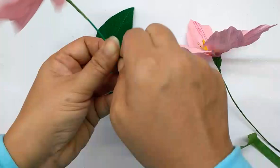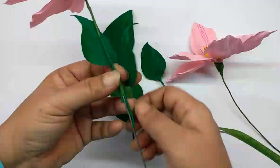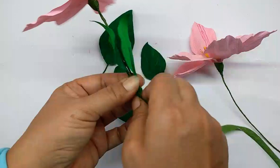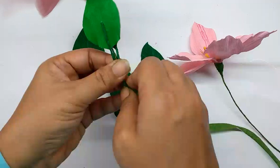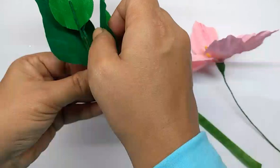Then attach some small leaves, a pair of leaves actually opposite to each other. They should be opposite to each other, and then just wrap the tape over. Then leave about an inch and attach some big leaves the same way.